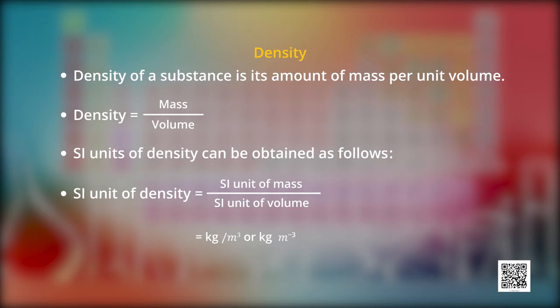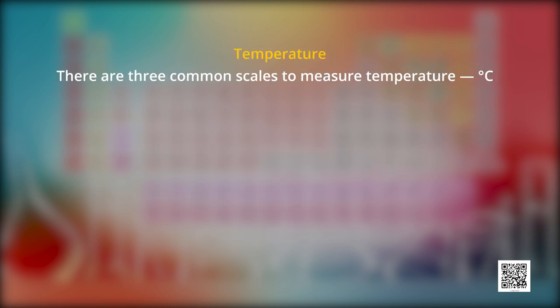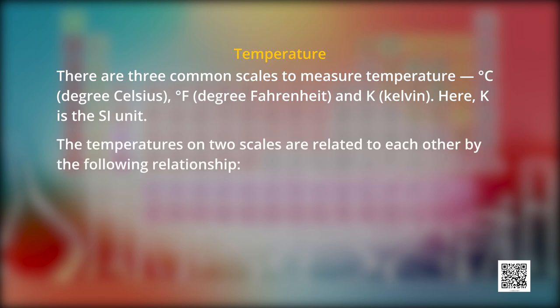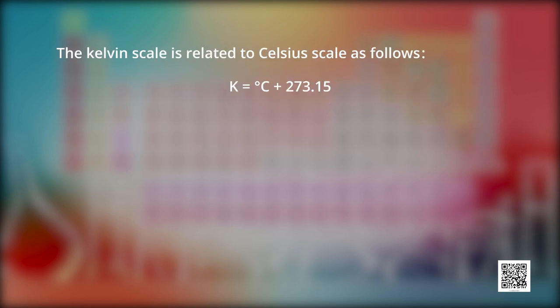Density is equal to mass per unit volume. The SI unit of density is kg per meter cube, but we are going to use the unit gram per centimeter cube because in laboratories we use smaller quantities of substances. There are three common scales to measure temperature: first one, degree Celsius; second, degree Fahrenheit; and third one, Kelvin. Kelvin is the SI unit. The temperatures on two scales are related to each other by the following relationship: C by 5 is equal to F minus 32 by 9. The Kelvin scale is related to Celsius scale as follows: Kelvin is equal to degree Celsius plus 273.15.